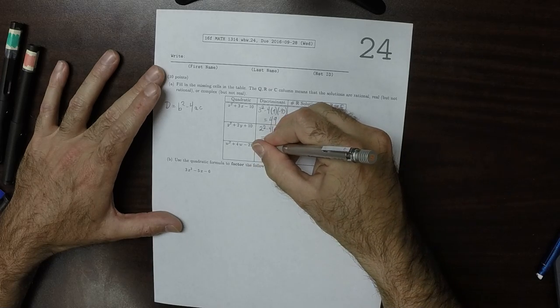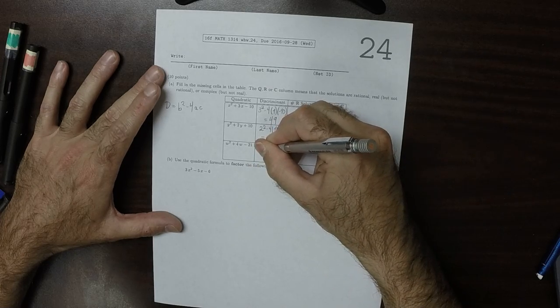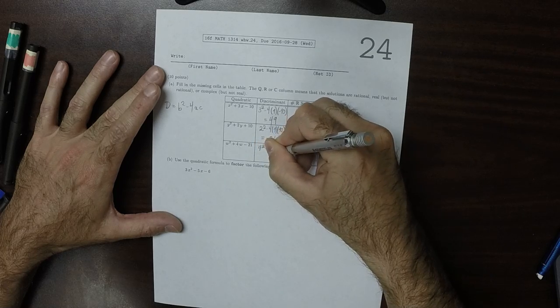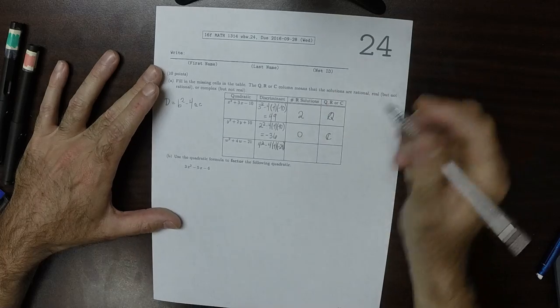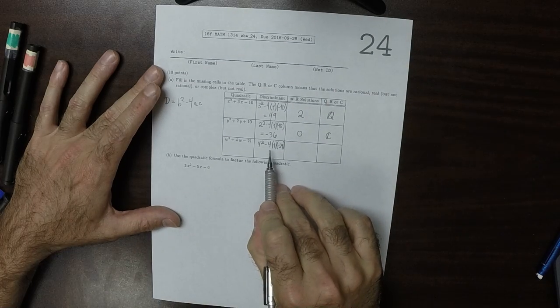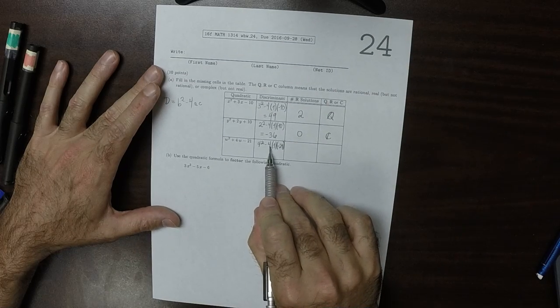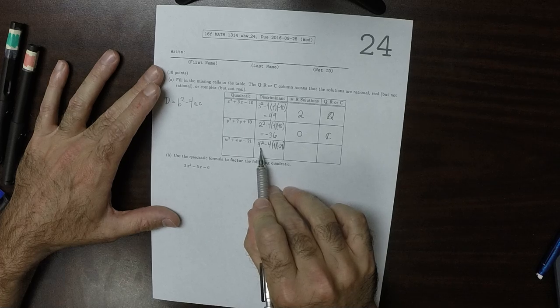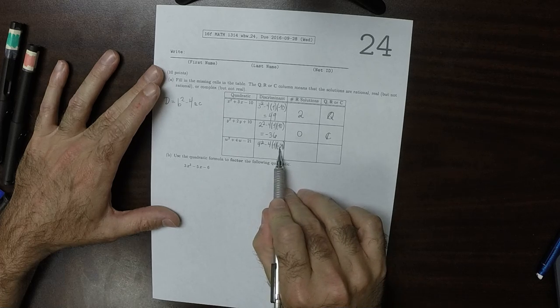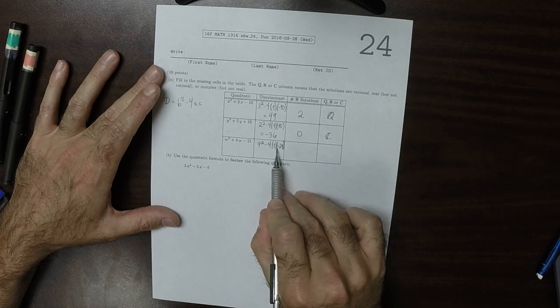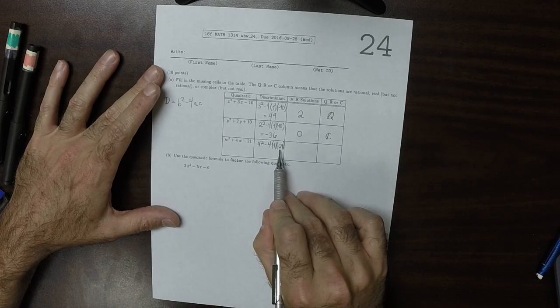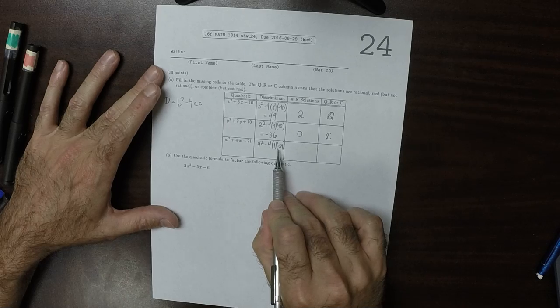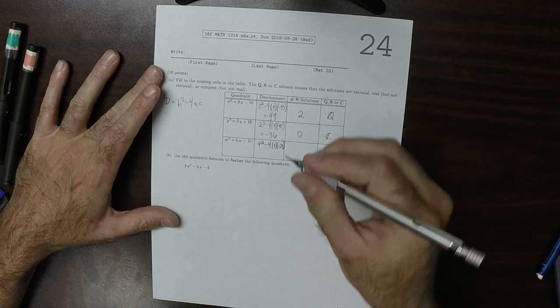And this is b squared, so 4 squared minus 4 times 1 times negative 21. So that's 16, and then that would be plus because of that negative 21. So 16 plus 84 is 100.